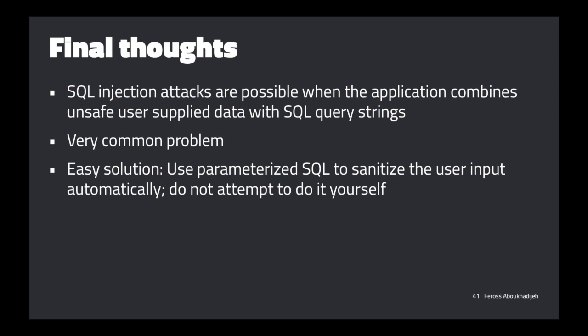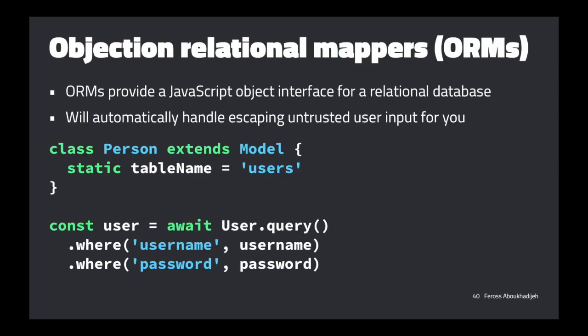Question: why not just use MongoDB since it's not relational? You still have the same problem if you're composing queries combined with untrusted user input. Your query might take the form of a query object in the NoSQL case instead of a query string, but if you're letting the user supply that object — maybe they're sending JSON — you're going to have the same problem. Something like Mongoose handles the escaping for you.